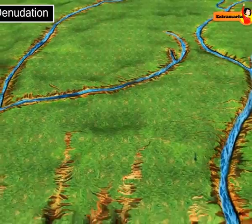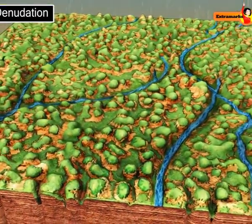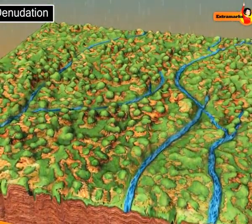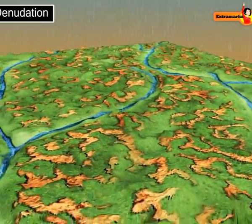The exogenous process by which major landform features are shaped over the years is known as denudation.